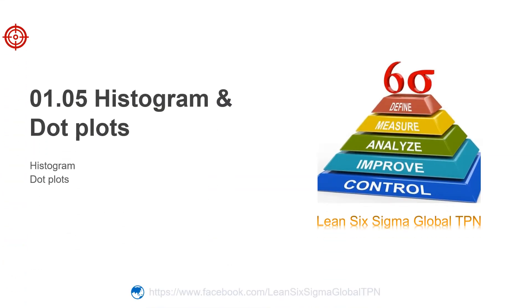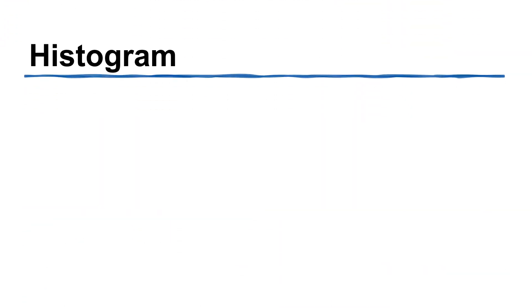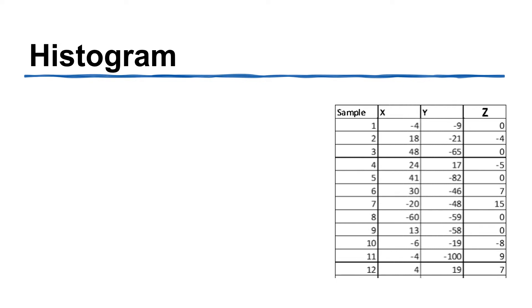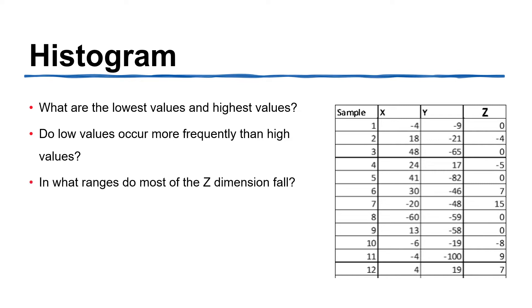Hello friends, today we talk about histogram and dot plots. Let's return to the XY dimensions of component. What are the lowest values and highest values? Do the low values occur more frequently than high values? And in what ranges do most of the dimensions fall?